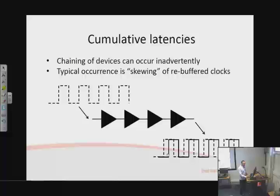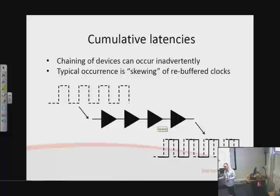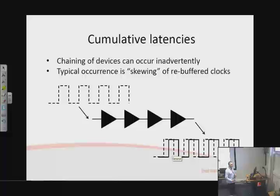These timing effects can accumulate. Chaining logic gates one after another causes propagation delays and rise times to stack up. A classic example is buffering a clock across multiple slots of a backplane — the switching delays accumulate, causing clock skew. Clock skew can corrupt data further down the chain. Be very careful about cumulative latencies, especially since they are also variable.